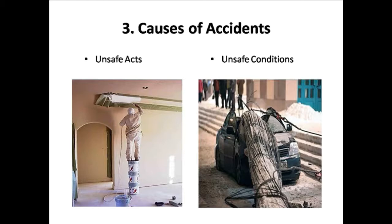The third topic is causes of accidents. There are two causes: unsafe acts and unsafe conditions. In the first picture, instead of using a stool or ladder, a person is standing on paint boxes — he may fall and suffer spinal cord or head injury. Such acts resulting from negligence are called unsafe acts. The second picture shows unsafe working conditions, where a car was not given a proper parking place and was damaged when something fell from the top floor.